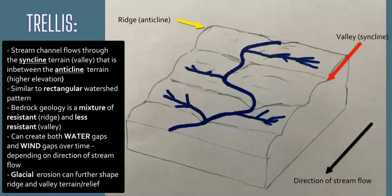The trellis watershed occurs in ridge-and-valley landscapes with anticlines and synclines, where areas of high-resistance rock types are mixed with lower-resistance valleys. Water flows through the valleys and lower elevations, creating a trellis pattern. Consequent, subsequent, and even obsequent streams form here based on the direction of flow, with tributaries matching into the main river to flow toward the outlet and discharge — creating a really distinctive-looking trellis watershed design.